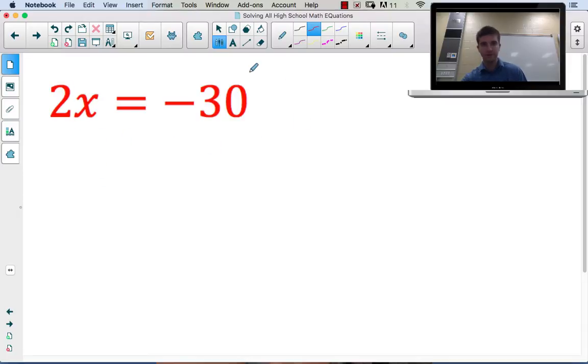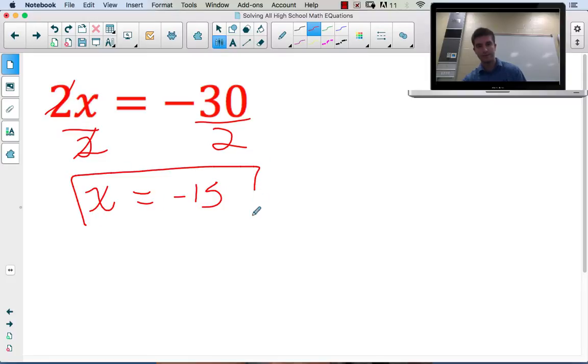Here's another grade 9 equation. This time, x is being multiplied by 2. The inverse of multiplying by 2 is dividing by 2. Do it to both sides. We get x equals half of -30, which is -15. That's the number that when you double it, you get -30.